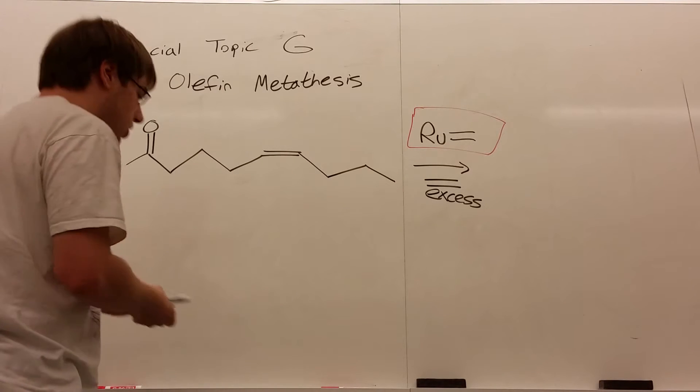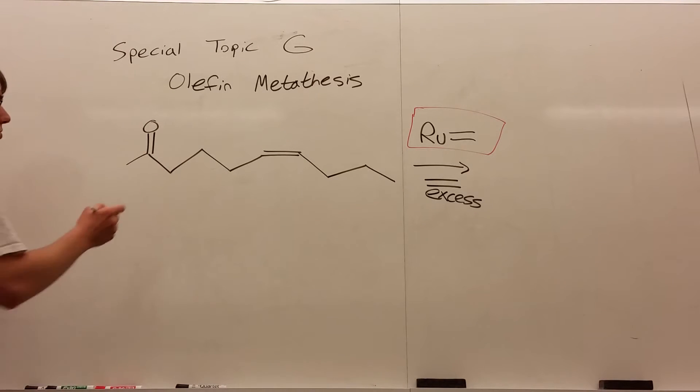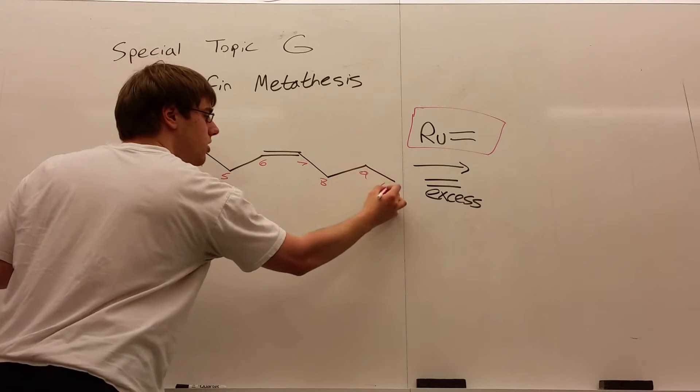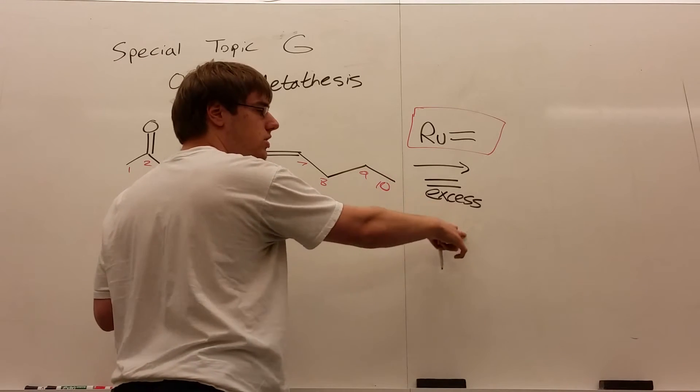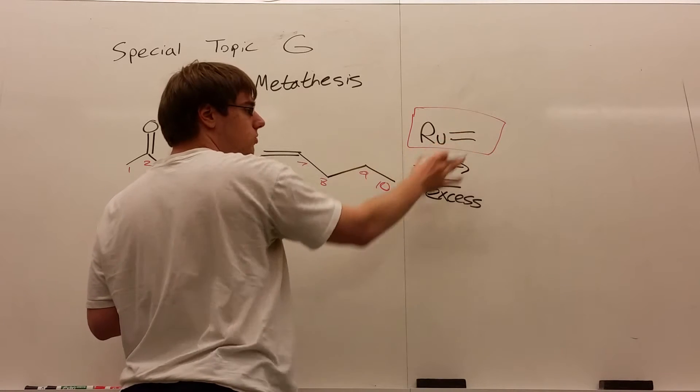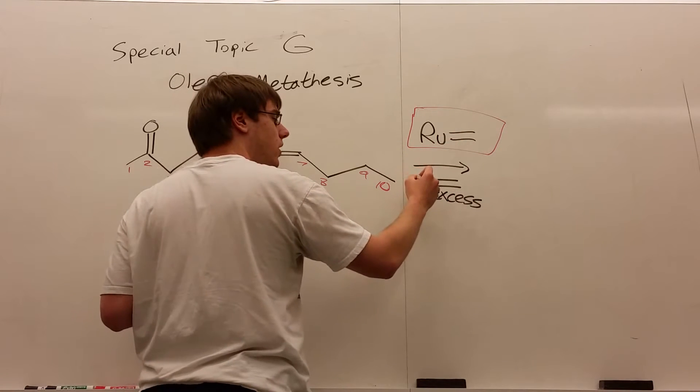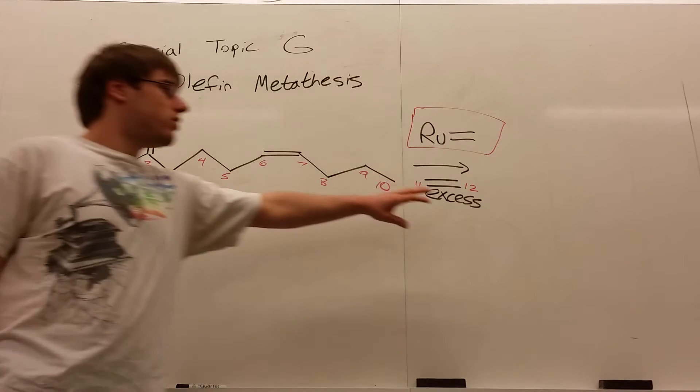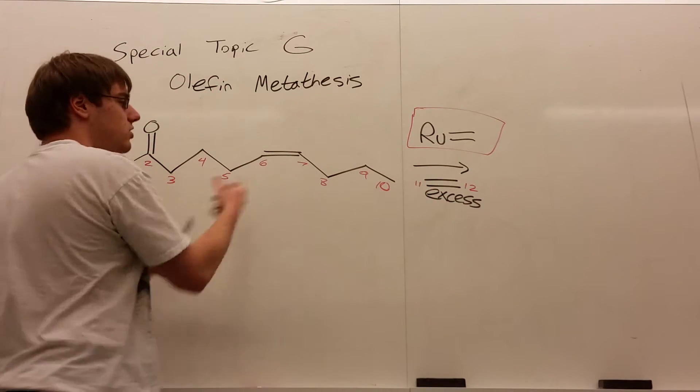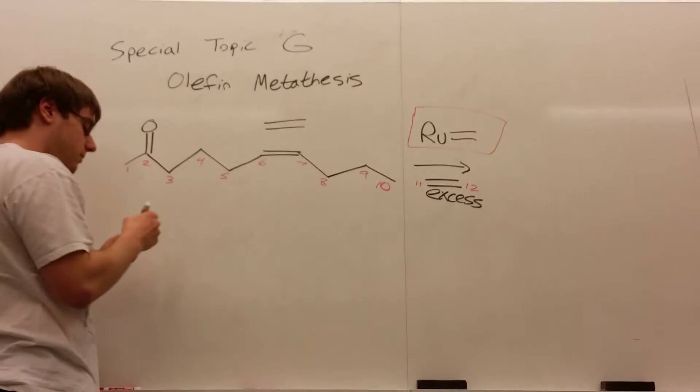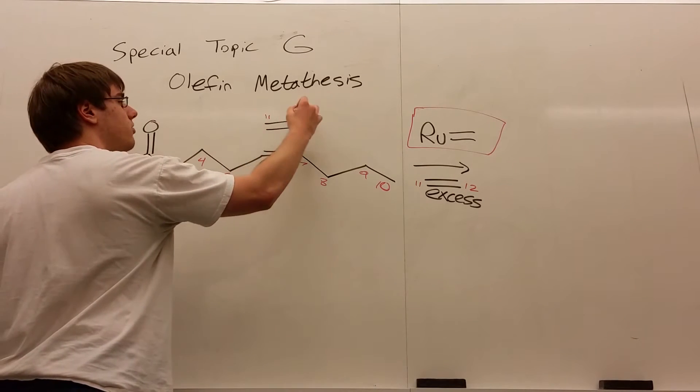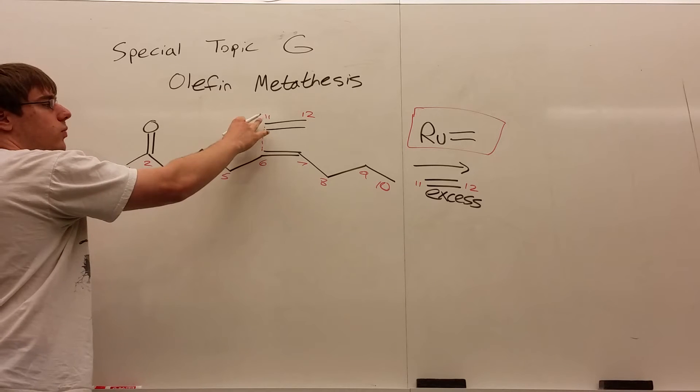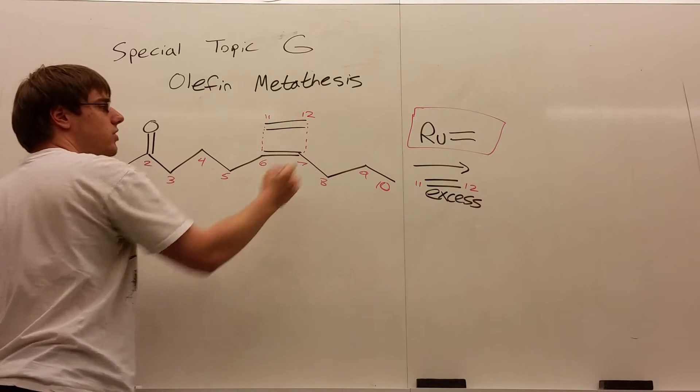Now, what you're going to do is first of all number your carbons, because it's very easy to accidentally gain or lose carbons that you don't intend to. So we have ten carbons in this chain right here, and then also number the double bond carbons, not the ruthenium carbons, but whatever the double bond they give you over the arrow. So I have eleven and twelve as well. Now what you're going to do is take the double bond that they give you and the other double bond and kind of line them up on top of each other. Now what you want to do is draw a dotted line between one end of the double bond and the other end of the double bond, and do the same on the other side.